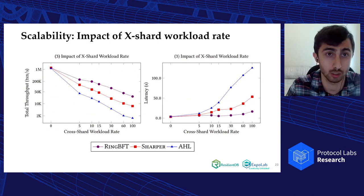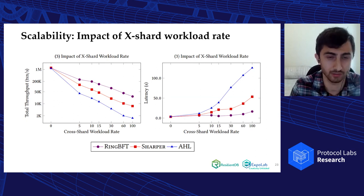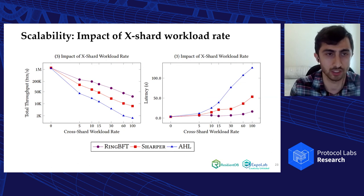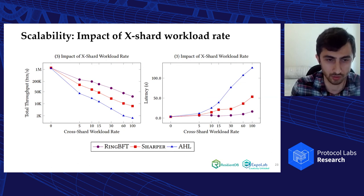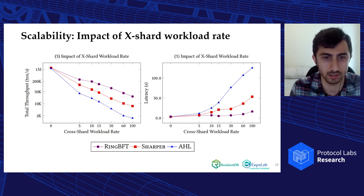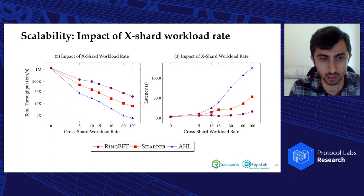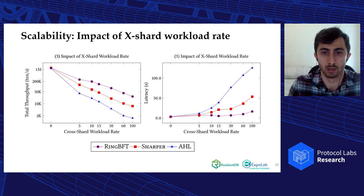Our next evaluation covers the impact of cross-shard workload. When we increase the cross-shard workload, at zero cross-shard we reached 1 million transactions per second on 540 nodes across 15 different regions. As cross-shard workload increases, all three protocols decline, but Ring BFT performs 20 times better than AHL and four times better than Sharper.